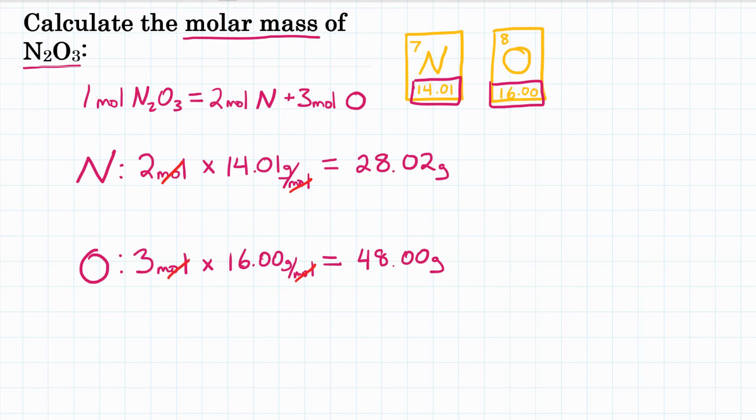So then finally, we add both of these together, the 28.02 and the 48.00. We're going to add those together, and we'll get 76.02 grams, or could be grams per mole, depending on how you do your units. So molar mass of N2O3 is going to be 76.02 grams or grams per mole.